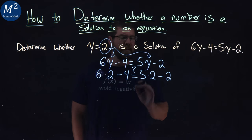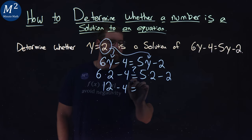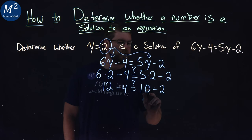So we keep everything on each side there and simplify. 6 times 2 is 12 minus 4 equals 5 times 2 is 10 minus 2.